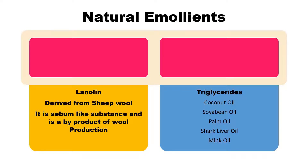From animal sources we also get a large number of emollients like shark liver oil and mink oil, which again have greasy properties utilized in a wide range of cosmeceuticals. Another special emollient from animal sources is lanolin, derived from sheep's wool. It has a sebum-like structure and is a by-product of the wool production industry. So natural emollients comprise lanolin and triglycerides from both plant and animal sources, widely found in natural herbal cosmetic preparations.